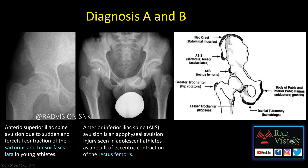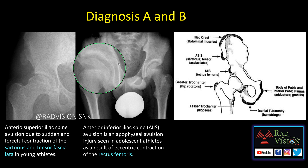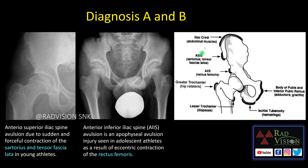In this image, the iliac crest avulsion is due to abdominal muscles. Sartorius and tensor fascia latae cause antero-superior iliac spine avulsion. Rectus femoris causes antero-inferior iliac spine avulsion. Hip rotators cause greater trochanter avulsion. Iliopsoas tendon causes lesser trochanter avulsion. Hamstrings cause ischial tuberosity avulsion, and adductors and gracilis cause body of pubis and inferior pubic ramus avulsion.